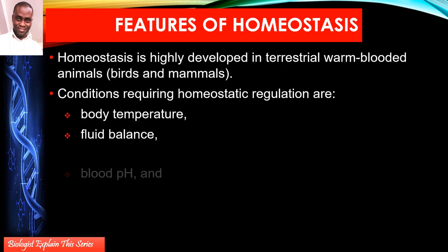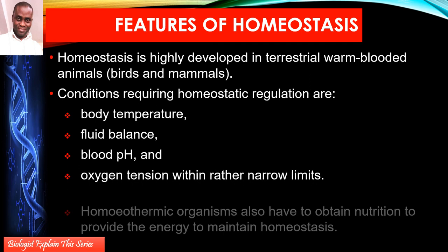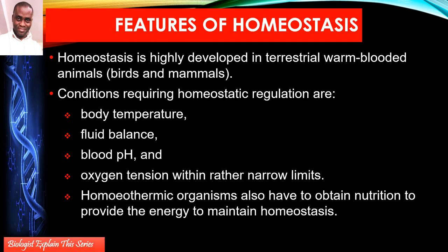Let's look at the features or characteristics of homeostasis. In terrestrial warm-blooded animals — the homeothermic vertebrates, which are birds and mammals — certain conditions require homeostatic regulation. These include: body temperature, fluid balance (osmoregulation), pH — the level of acidity or alkalinity of body fluids — and oxygen tension, which must be maintained because without enough oxygen, aerobic processes will not produce ATP.